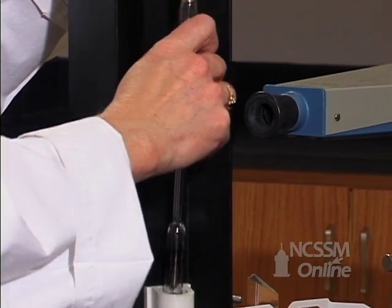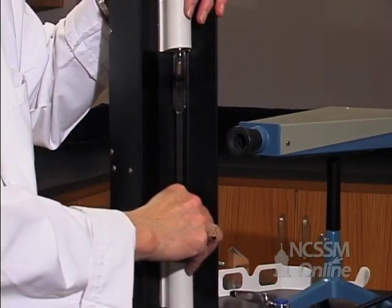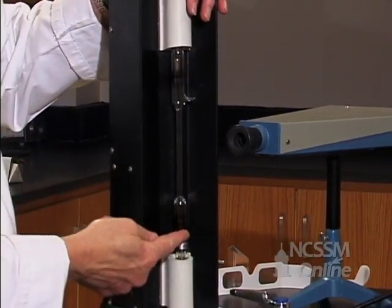Here we have a high voltage source, so we can get about 5,000 volts of electricity, potential difference between these two electrodes.